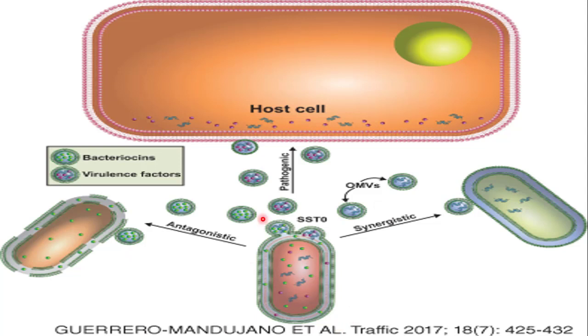When virulence factors are released — as you can see the purple colored dots, these are pathogenic — they enter into the host cell through various mechanisms and infect the cell.